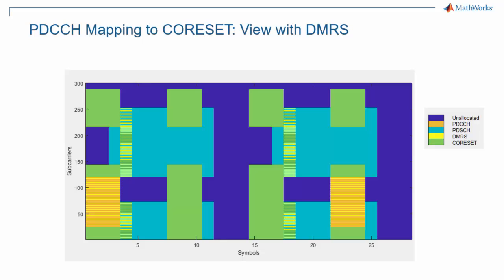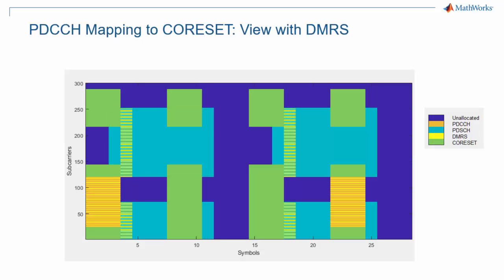On this view of the same frequency-time location, we also represent the demodulation reference symbols, or DMRS, associated with the PDCCH in orange, and the data channel, or PDSCH, in teal. DMRS are shown in yellow. Out of every set of 72 resource elements where a PDCCH is mapped, 54 are for PDCCH and 18 are for associated DMRS.